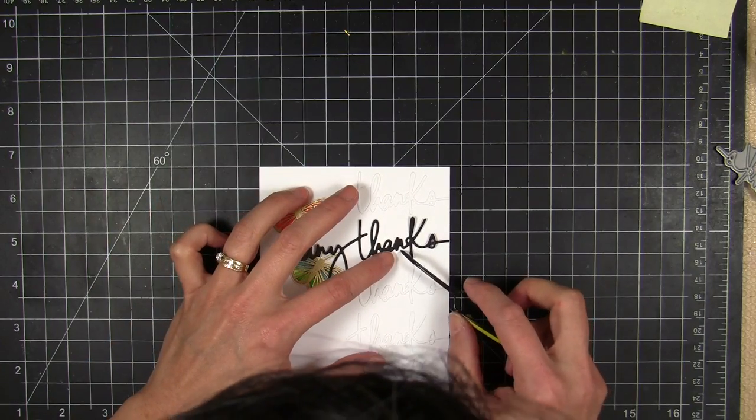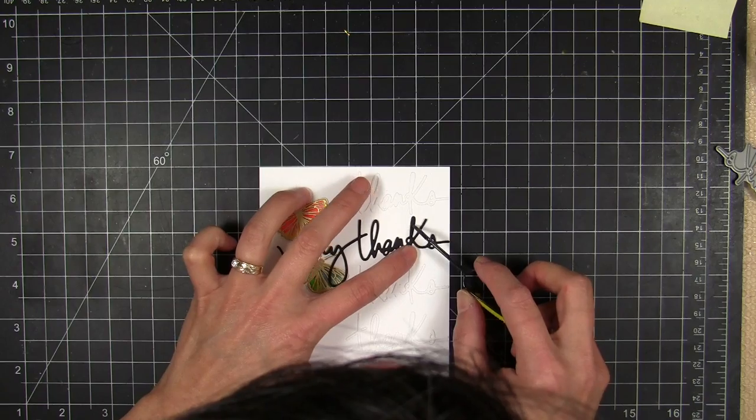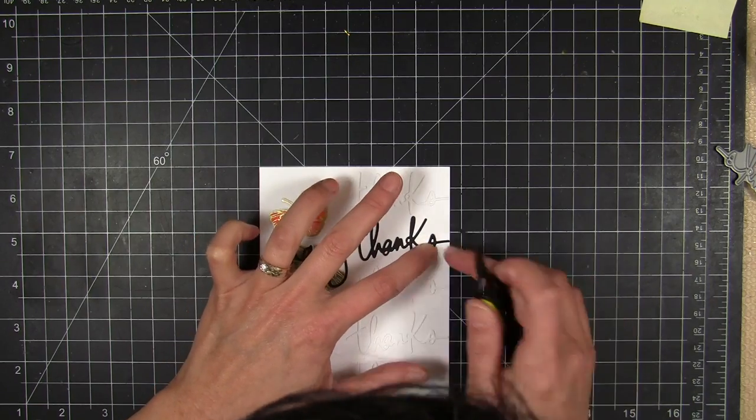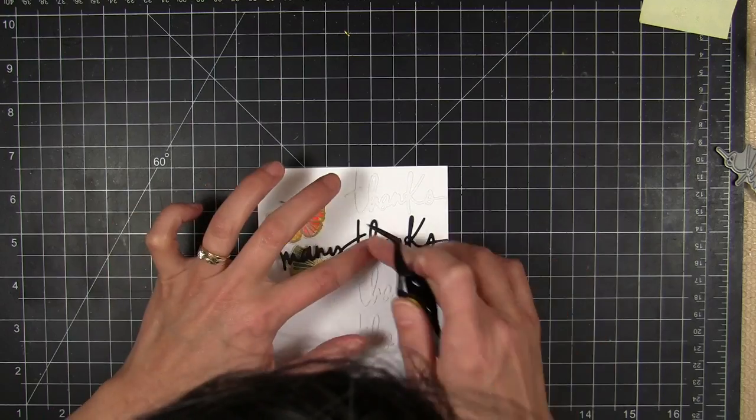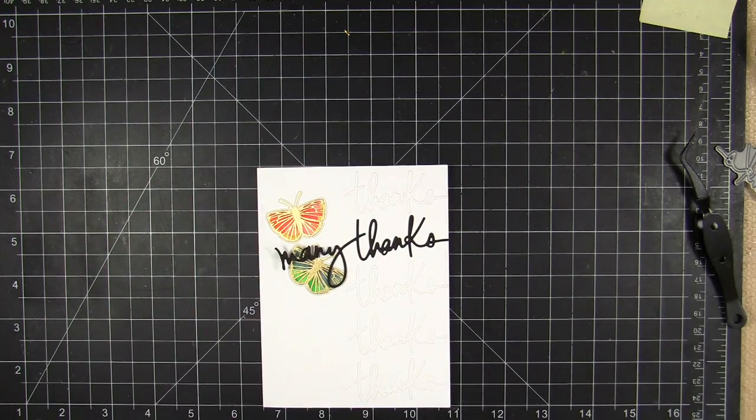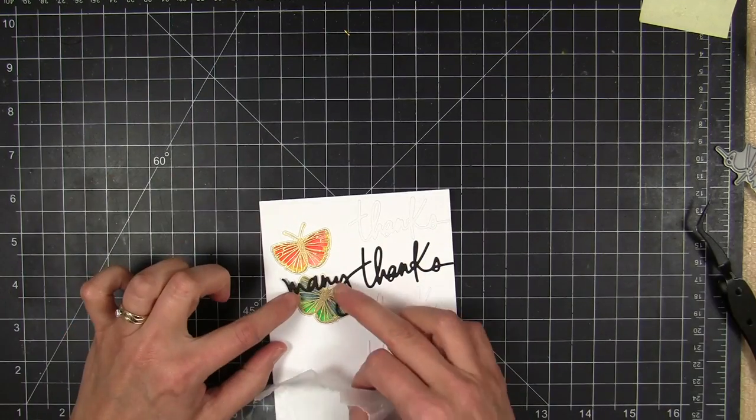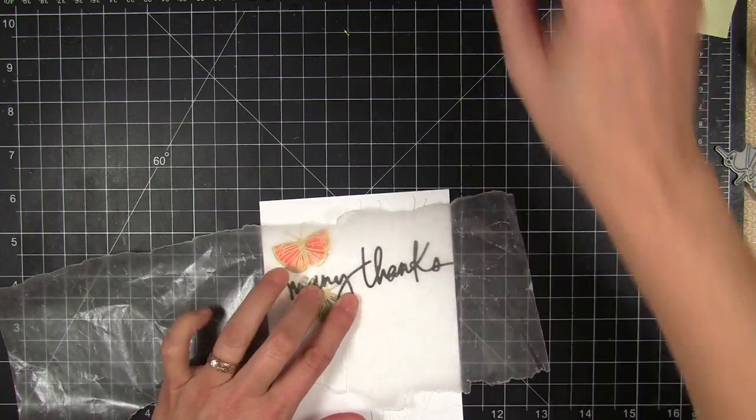And I'm lining up the thanks portion over the top of one of the white thanks that were already glued down to the card front. It's kind of hard to see because it's white on white there. And then Many is going to get anchored down over the top of those butterflies.